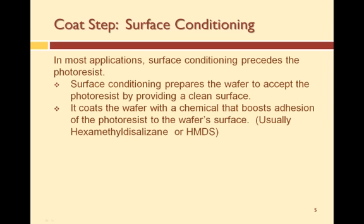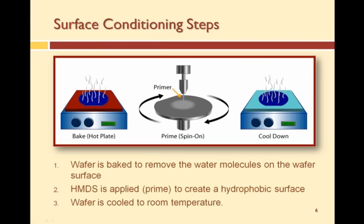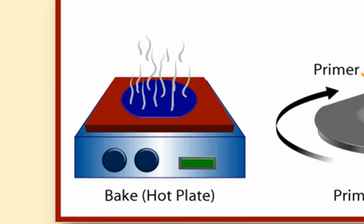Surface conditioning also coats the wafer with a primer. This primer is normally a chemical called HMDS or hexamethyl disilazane. Starting at the beginning of the surface conditioning process, the wafer is first cleaned, then baked to remove any remaining moisture on the wafer surface.